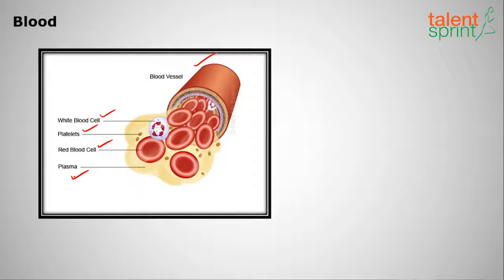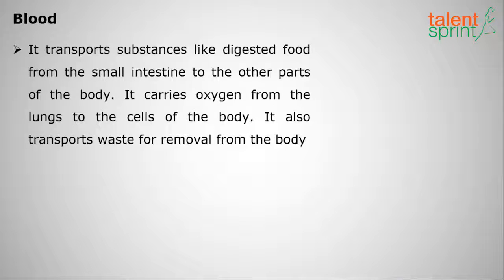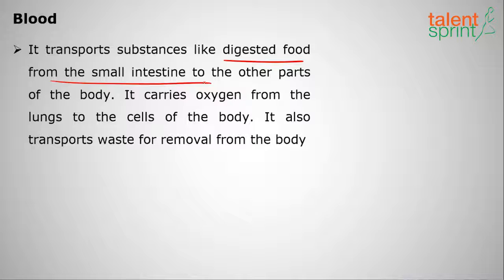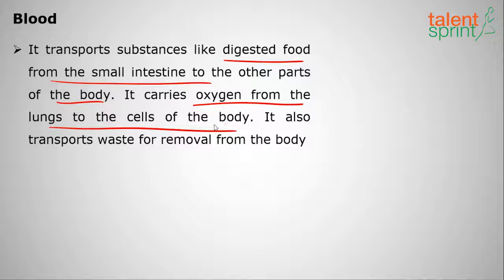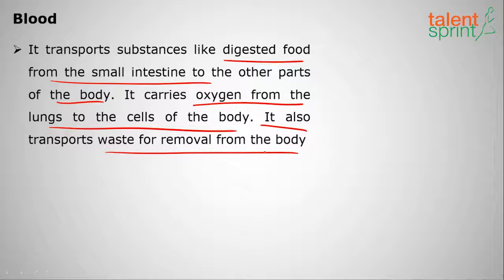Plasma contains the fluid part of the blood. Moving on to the uses of blood: it is used to transport substances like digested food from the small intestine to other parts of the body. It carries oxygen from the lungs to the cells of the body, and it also transports waste from the body.